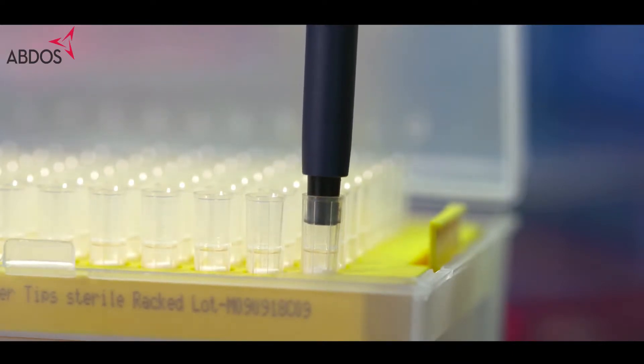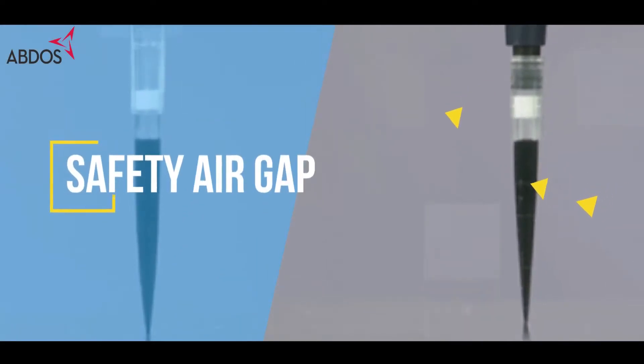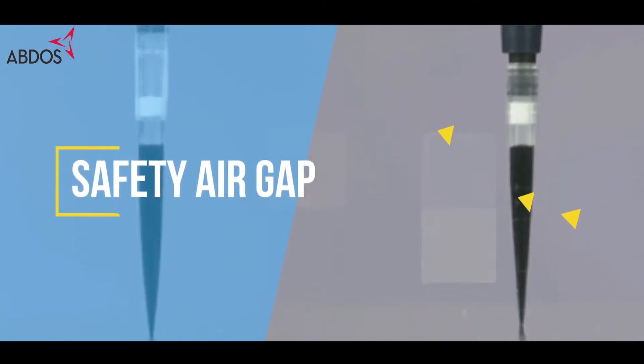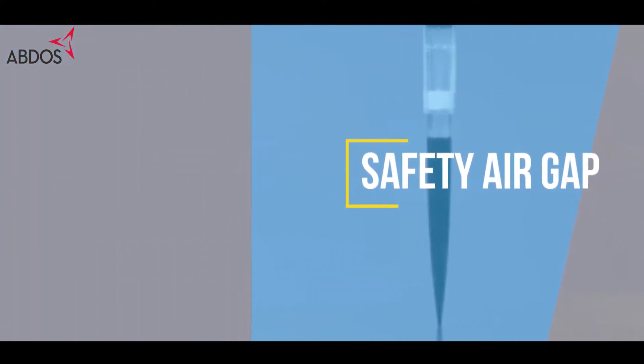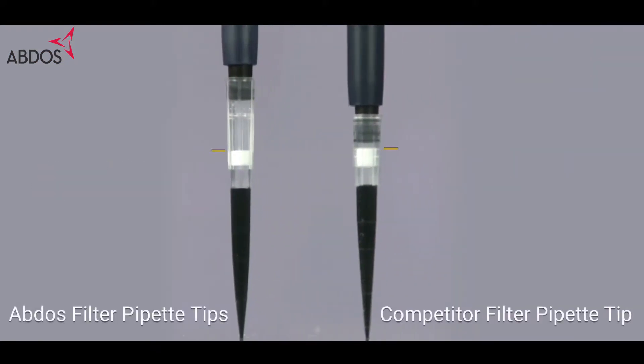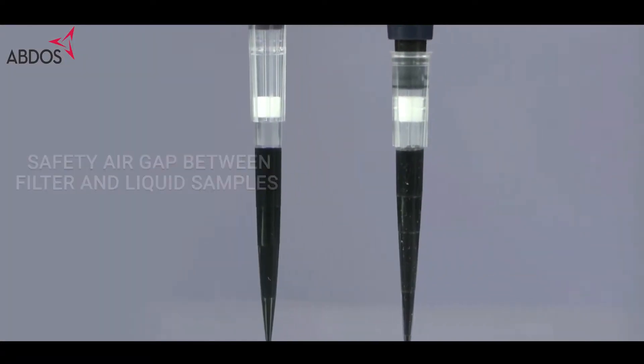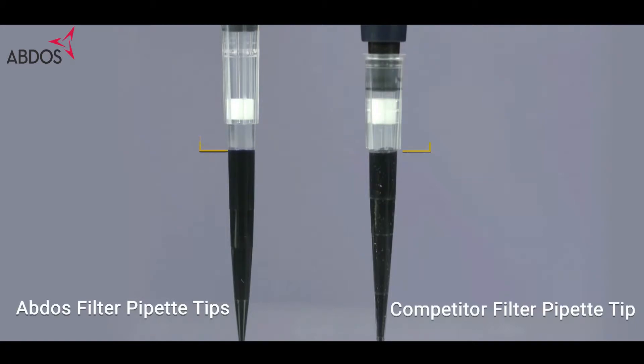In comparison to our competitors, ABDOS super filter pipette tips get more air gap between filter and pipette shaft and between filter and liquid, ensuring smooth and hassle-free pipetting with the safety air gap to prevent cross-contamination.